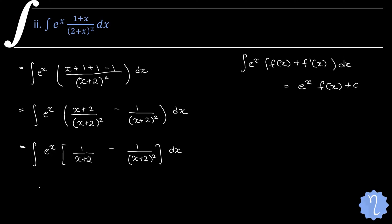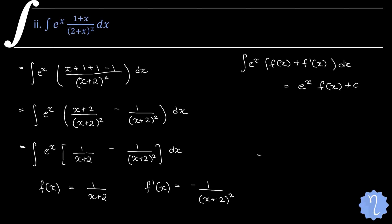We take f(x) = 1/(x+2). Its derivative is −1/(x+2)², since differentiating x⁻¹ brings down −1 making it x⁻², and the derivative of (x+2) is 1 so it stays the same. So f′(x) = −1/(x+2)². Therefore the answer is simply eˣ/(x+2) + c, because that is the value of eˣ·f(x). That is the final answer.